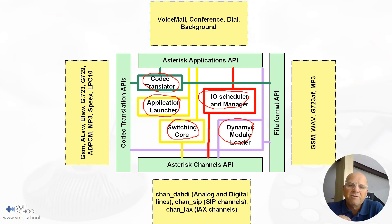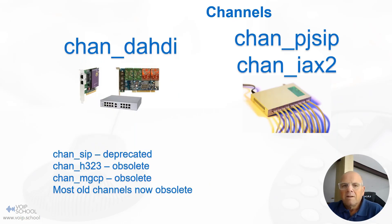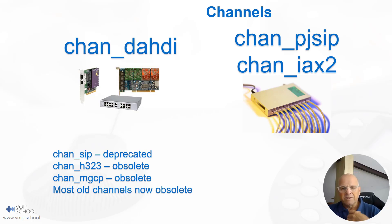The applications API is used to create an IVR where you connect channels and run applications over them. There were many channels in the beginning of Asterisk, like chan_h323.